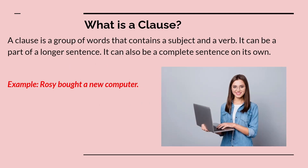Now let's understand clauses. A clause is a group of words that contains a subject and a verb. It can be a part of a longer sentence, or it can also be a complete sentence on its own. For example: 'Rosie bought a new computer.' Here, the subject is Rosie and the verb is bought — it follows subject-verb pairing. It is a clause as well as a sentence because it conveys a complete thought. But all clauses are not sentences.